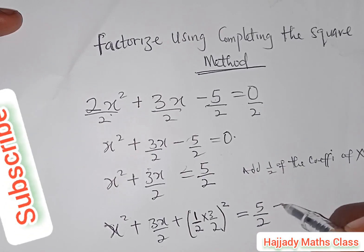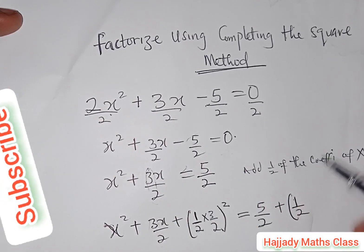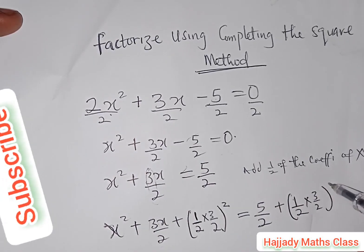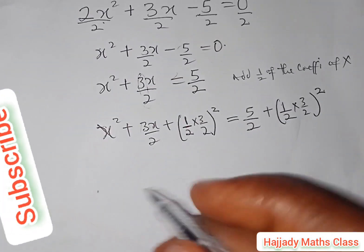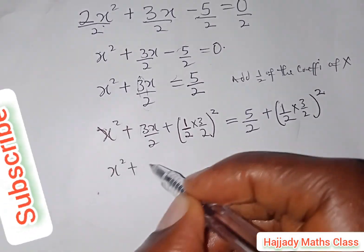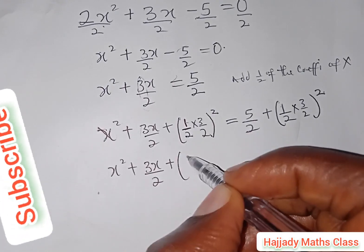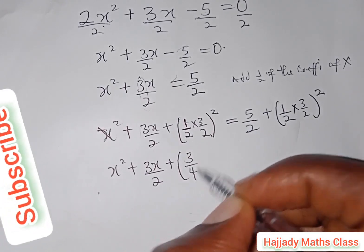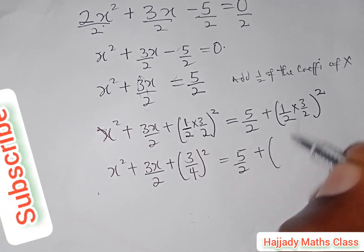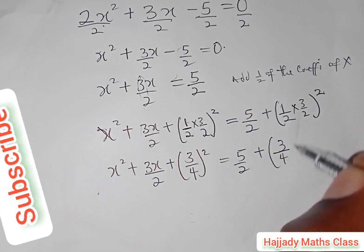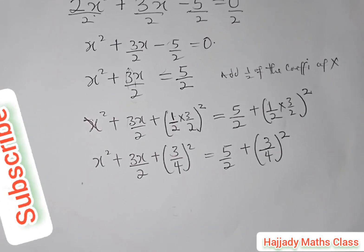The right-hand side has 5/2, and we also add the square of half the coefficient of x, which is half times 3/2, squared. On the next line we have x² + 3x/2 + 3/4 squared equals 5/2 + (3/4) squared.